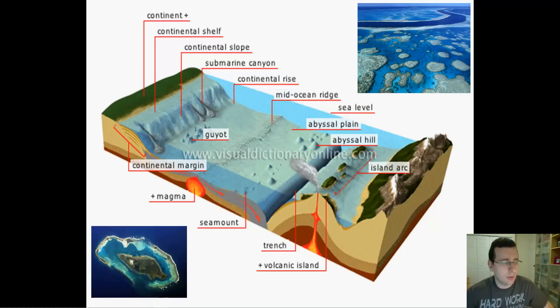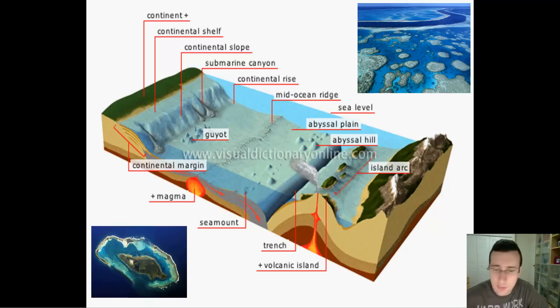Continuing the video about features of the ocean floor, this one will focus mostly on the deep ocean basins — the part of the ocean covered with water on top of the actual oceanic crust. The main features of that part will be the abyssal plain, the mid-ocean ridges, the seamounts, island chains, islands, guyots, trenches, and also atolls or barrier islands. We'll talk about each one of these features now.